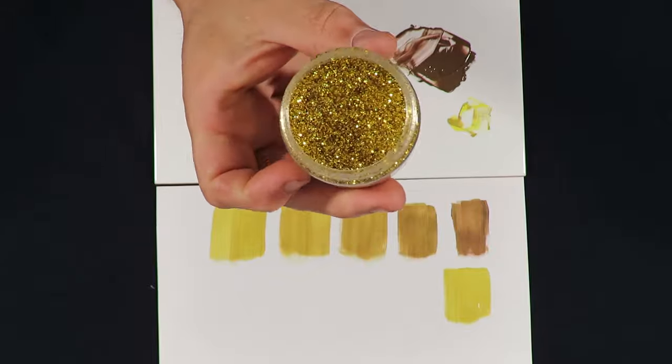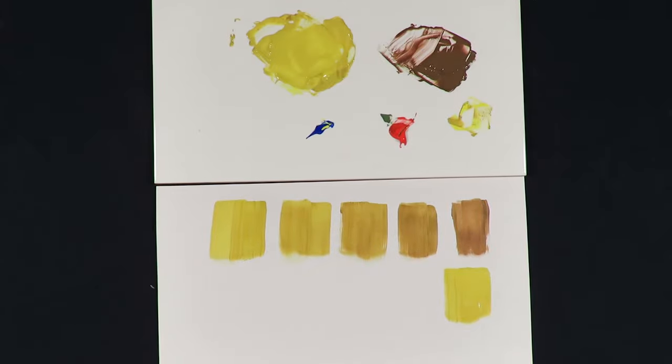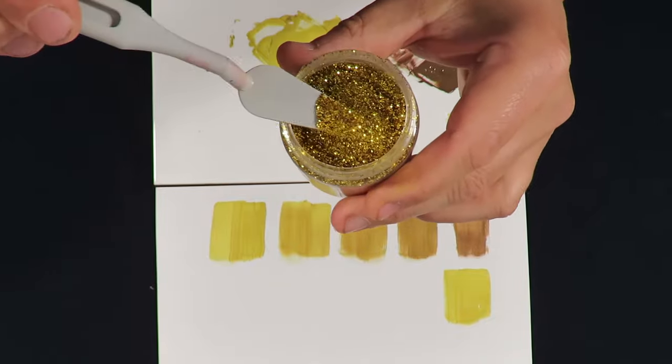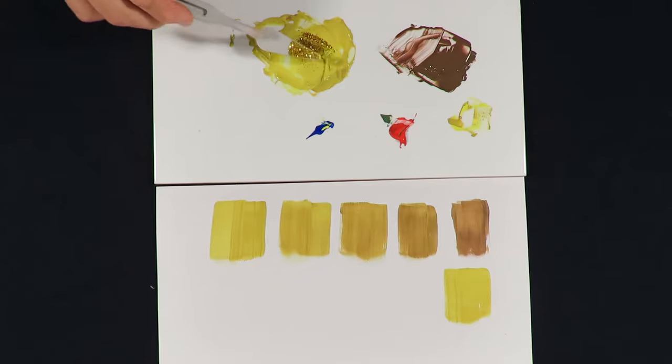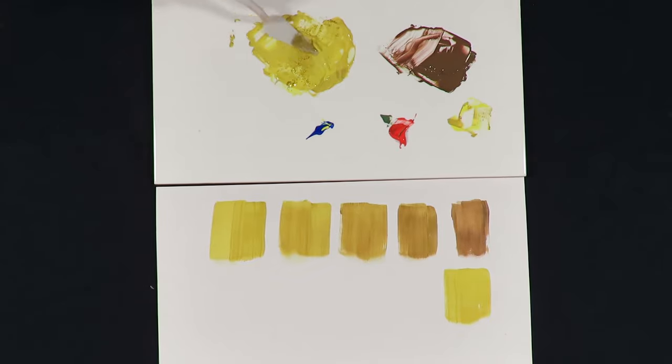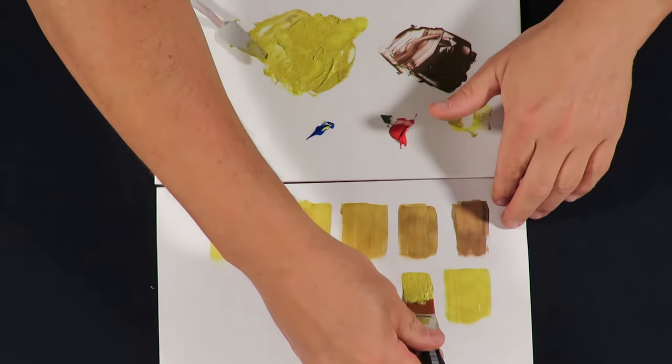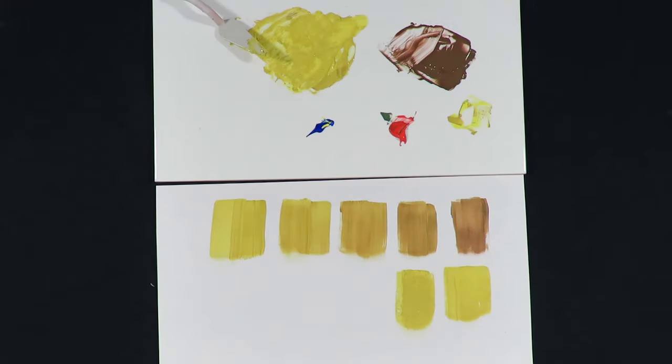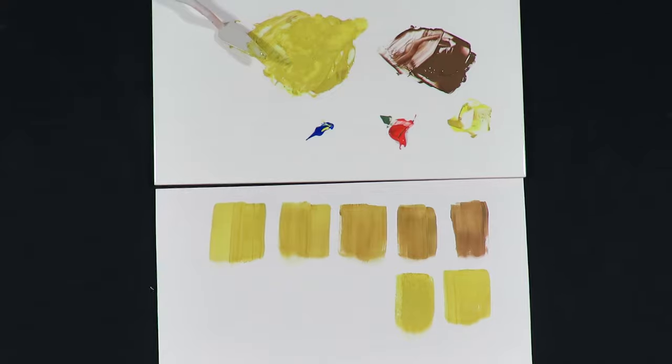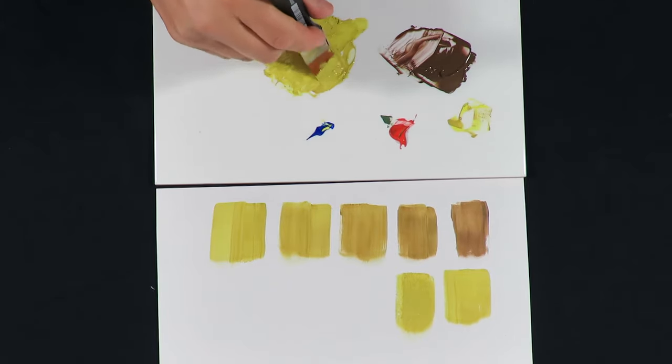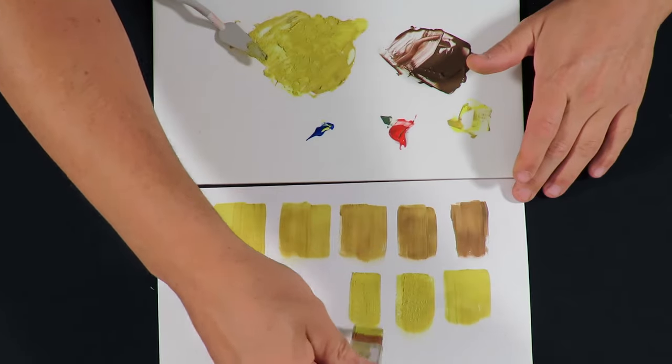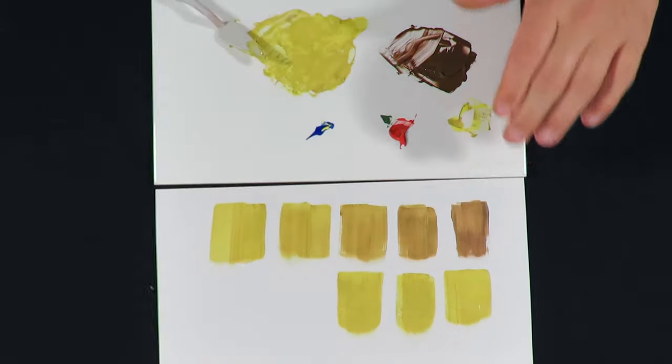I have some glitter here that I'm going to put in my paint just to see what happens. So I add a little bit of glitter on my palette knife and mix it with this paint. So I'm going to paint a bit on there and add a bit of glitter.